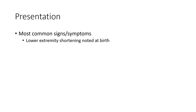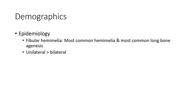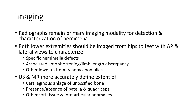Presentation: lower extremity shortening is noted at birth. Epidemiology: fibula hemimelia is the most common hemimelia and the most common long bone agenesis. It is more often unilateral than bilateral.